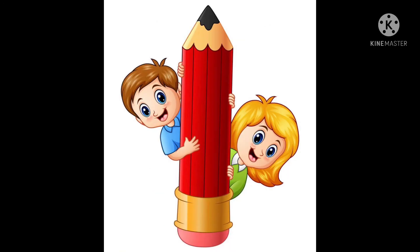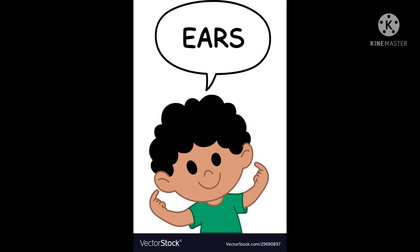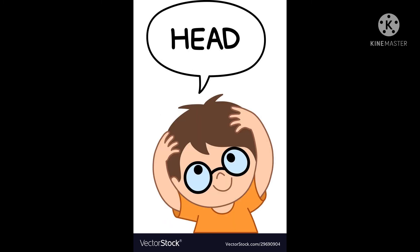Now let's revise. Eye — we call it ankh. Ankh. Next, ears — we call it kan. Next, head — we call it seer. Seer.